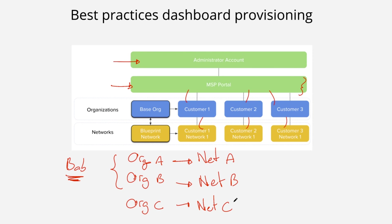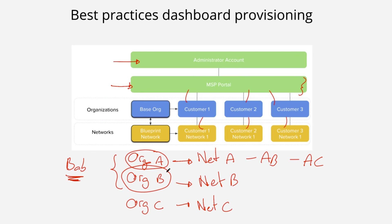So what are the best practices now that you have this MSP portal? Let's say you have a consultancy or service provider firm with new customers, each having different networks. For Customer A, create Organization A for them — if they have different branches, say Branch AA, Branch AB, and Branch AC — those three branches live inside the same organization so all licenses belong to Customer A. For another customer, Customer B, use a separate organization with two branches: BA and BB.